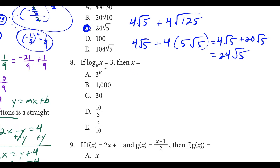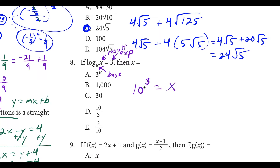Question eight can be easy if you know how to translate logs into exponentials. The small number at the subscript location is the base of the log. So we have the base, the exponent, and the result. To turn this into exponent form, write the base as 10, the exponent as 3, and the result as x. Then simplify: 10 times 10 times 10 equals 1,000. So the value of x is 1,000.